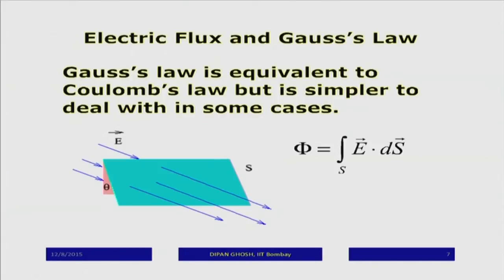Having defined the electric field and discussed the principle of superposition, we now address the question of electric flux and the electric field. Remember, we defined the flux of a vector field as the surface integral of that vector field over a surface, defined in a particular way. Now, if this field is my electric field, I can define the flux through any surface as the surface integral of the electric field over that surface. The definition of dS vector uses the outward normal.